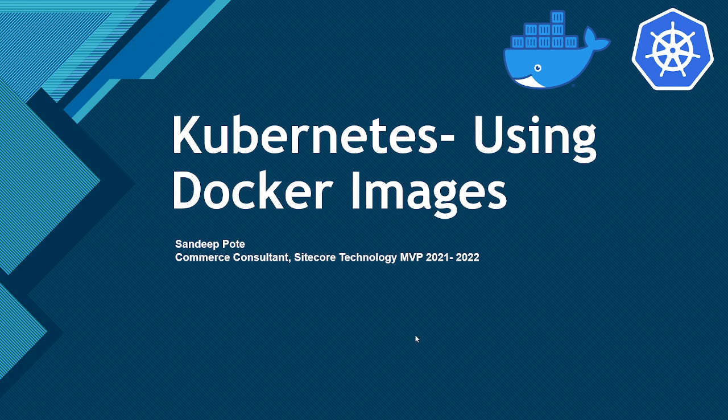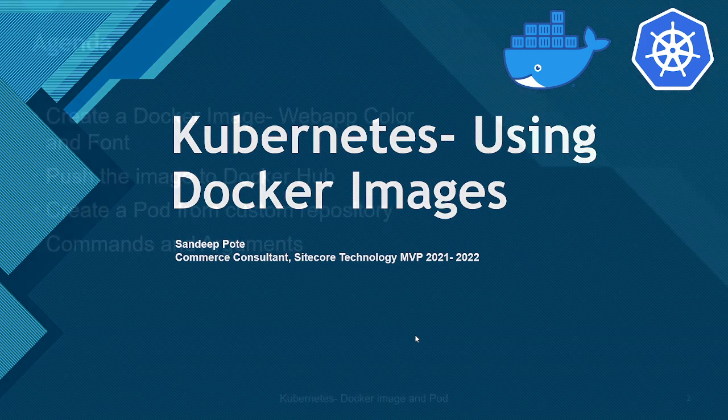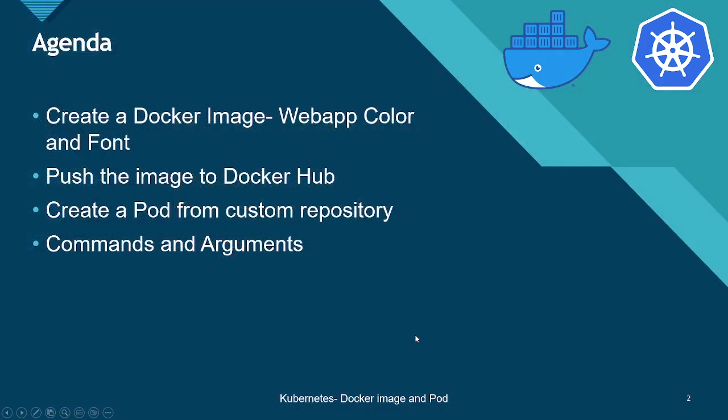In this video I'm going to show how to create a Docker image with a simple web app. The color and font application is built on Python and serves a web page. Once we create the image, we'll create a Docker container and then test that web page which is hosted in Docker.